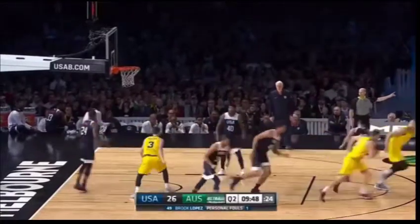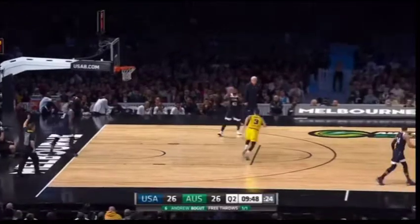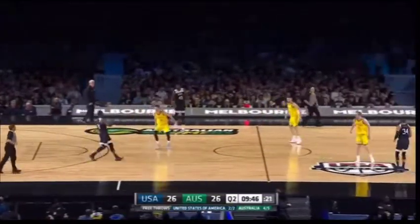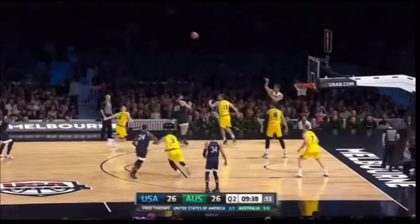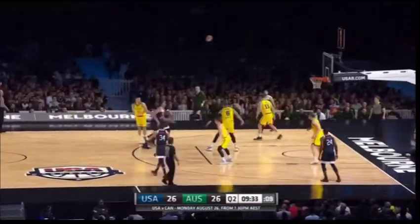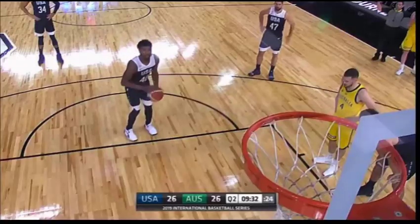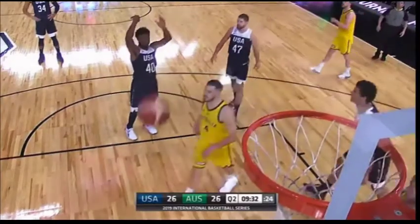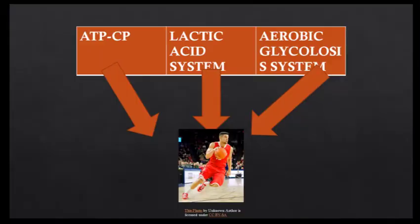Basketball is a team point-based game where five players from each team attempt to score more goals than the other. Basketball encourages the development of primary movements and key skills such as jumping, shooting, passing, receiving, sprinting and dribbling for a maximal result. In this assessment I will be analysing energy systems and their role in a game of basketball.